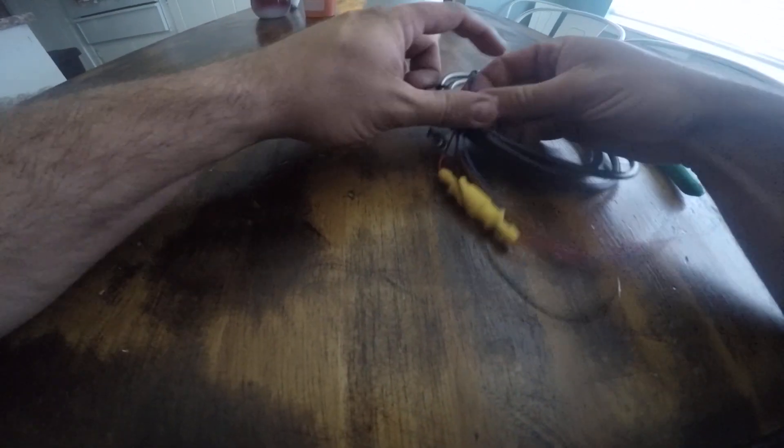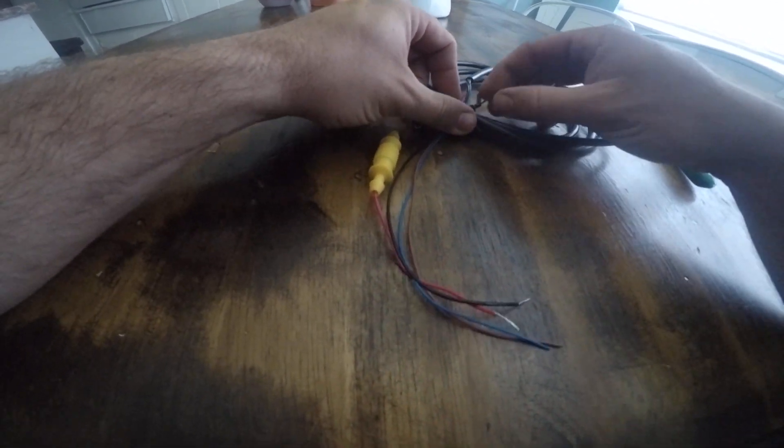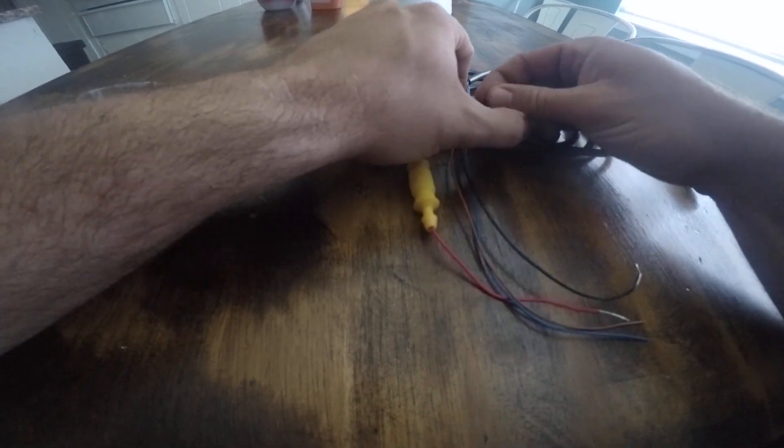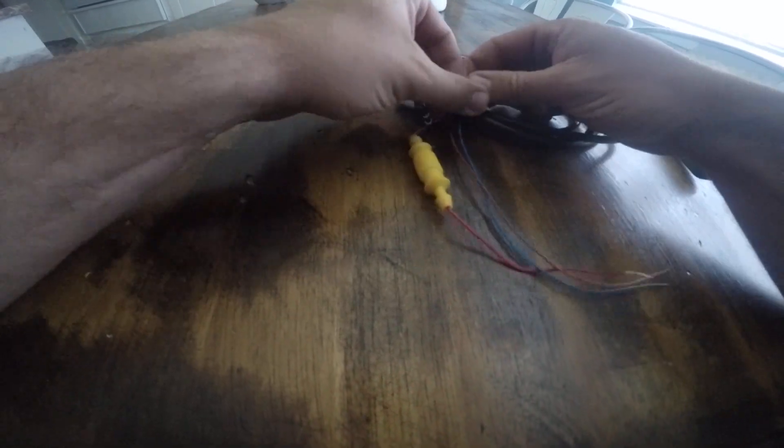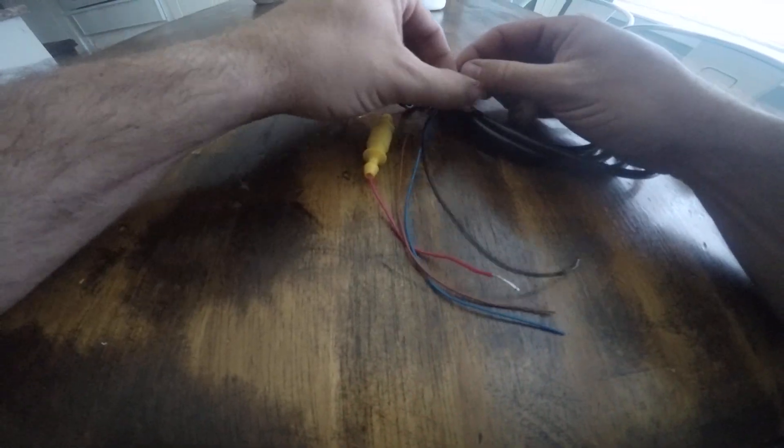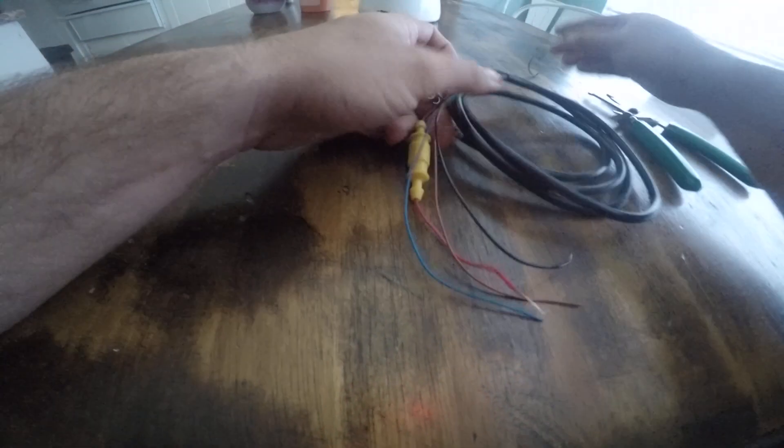Okay, so I'm going to undo the Garmin cables first. Okay, so this is the side that goes into the fish finder. That's going to be over here.